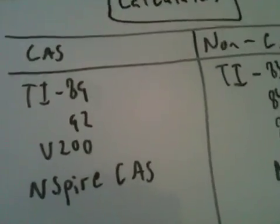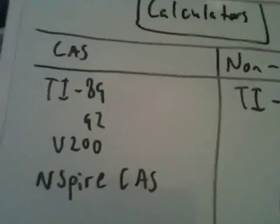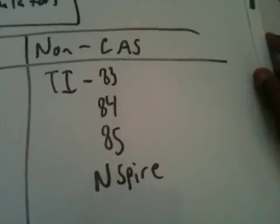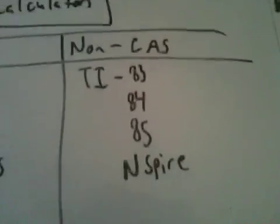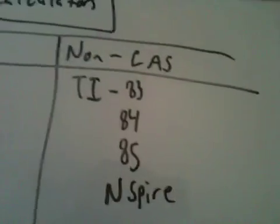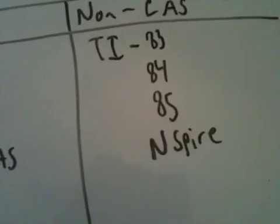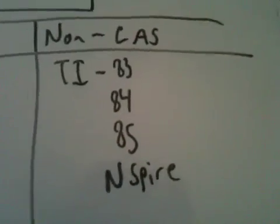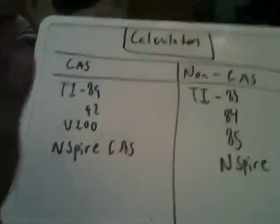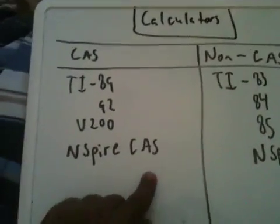Now, there are other types of calculators. These are non-CASs. So these are your TI-83s, your 83-pluses, 84-pluses, 85s, 86s, 82s, and also your Inspires. The difference between the Inspire and the Inspire with the CAS is just that. The Inspire CAS has a computer algebra system.